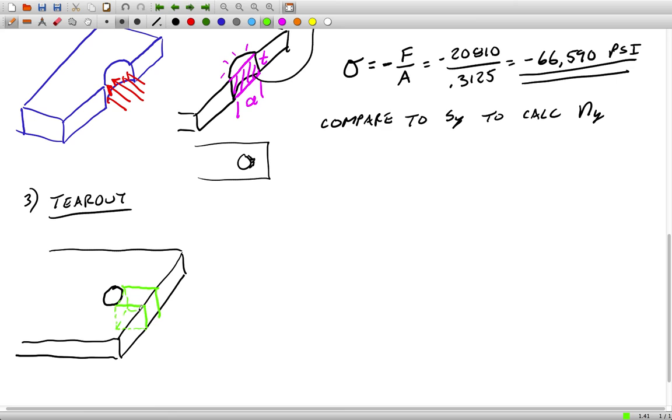In tear out, what happens basically is the entire chunk of metal in front of the hole, this little block, rips out of the plate. This tears directly out of the plate.